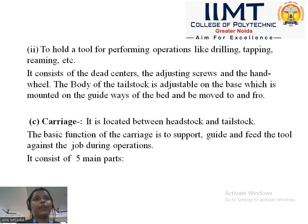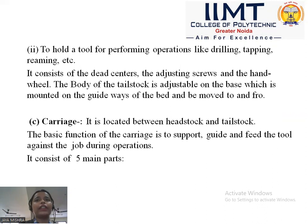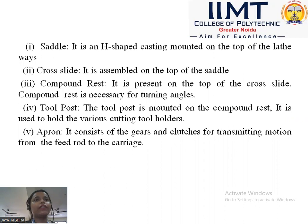The tailstock holds tools for performing operations like drilling, tapping, and reaming. It consists of bed centers, adjusting screws, and a hand wheel. With the help of the hand wheel, the tailstock can be moved in horizontal directions. The body of the tailstock is adjustable and can be mounted on the guideways on the bed. On the guideways there are other parts mounted, including the carriage, which has five main parts: saddle, cross slide, compound rest, tool post, and apron.